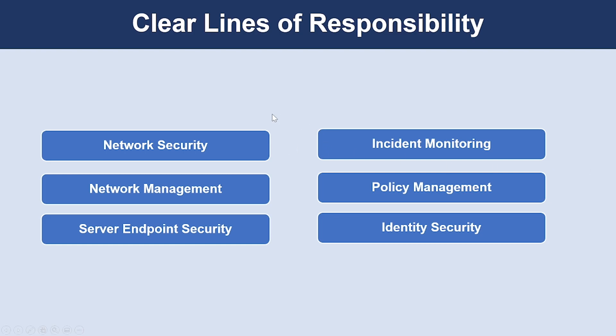First, we need to designate groups or individual roles responsible for key functions. The first one is the network security group or individual role. This typically includes the existing network security team, configuration and maintenance of Azure Firewall, network virtual appliances, web application firewalls, NSGs, ASGs, etc.